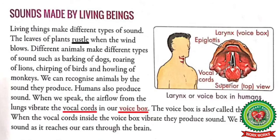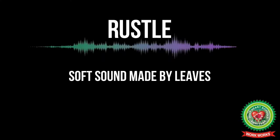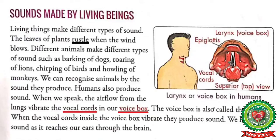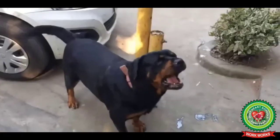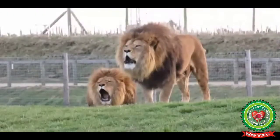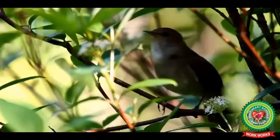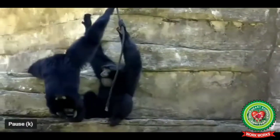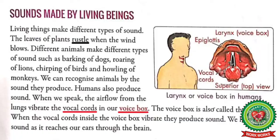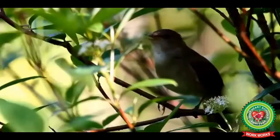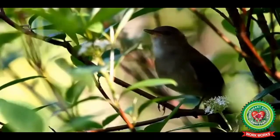Next topic is sounds made by living beings. Living beings also make different types of sounds. The leaves of plants rustle when the wind blows. Underline the word 'rustle' and write down its meaning: soft sound made by leaves. Different animals make different types of sounds, such as barking of dogs, roaring of lions, chirping of birds, and howling of monkeys, etc. We are able to recognize animals by the sound they produce.